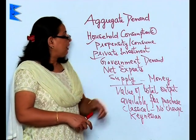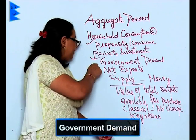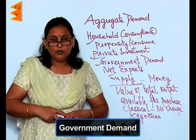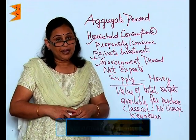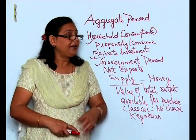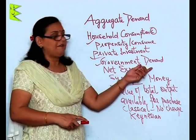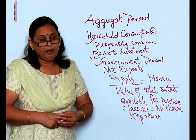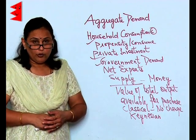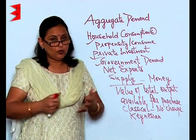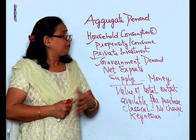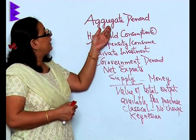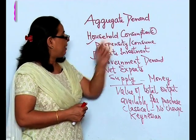The third component is government demand. Whatever goods and services are required or demanded by the government is government demand — it could be for building roads, bridges, and so on. All this comes under aggregate demand.